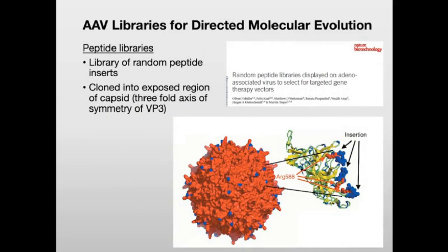Inspired by bacteriophage libraries, researchers have been using peptide display libraries on AAV for the past couple of decades. In this strategy, a library of random peptide inserts — usually about 7 to 9 amino acids — are cloned into an exposed loop region on the VP3 protein on the capsid surface, usually between amino acids 588 and 589. This is on an exposed region at the three-fold axis of symmetry, and there can be as many as 50 copies expressed on VP3.